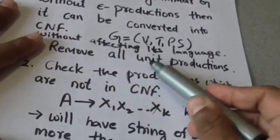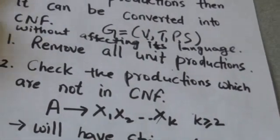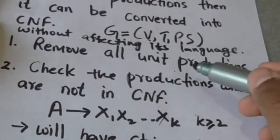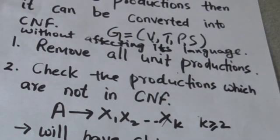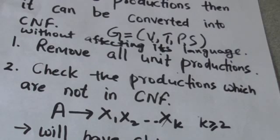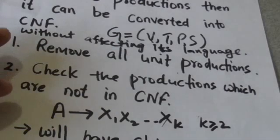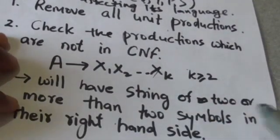To convert grammar G into CNF without affecting its language, first we will remove all unit productions from G. How to remove unit productions has been explained in previous tutorials. After removing all unit productions, we need to find the productions which are not in Chomsky Normal Form. The remaining non-CNF productions will all have a string of two or more than two symbols on their right-hand side.